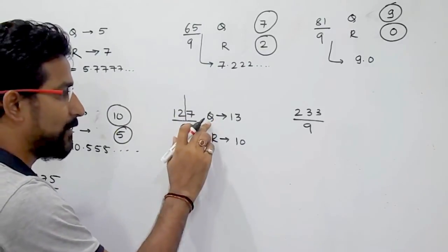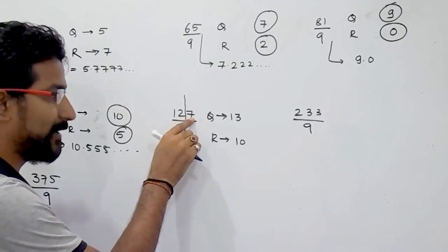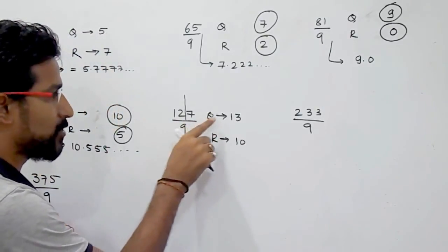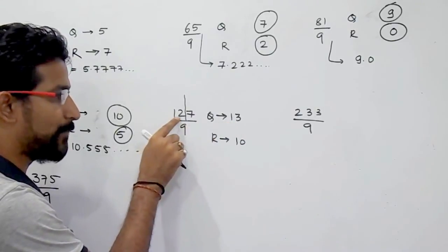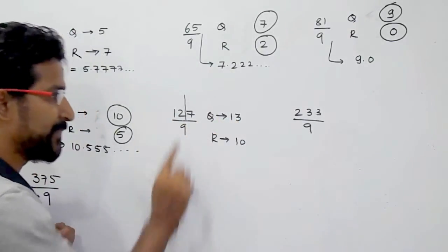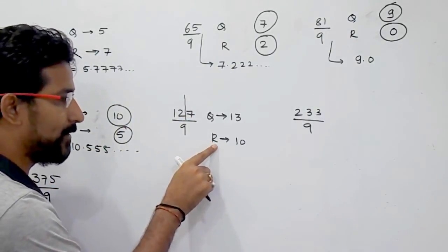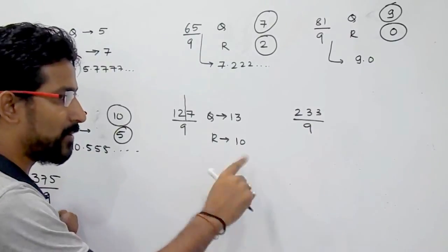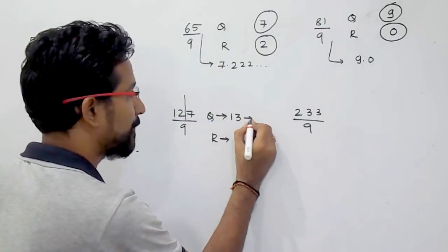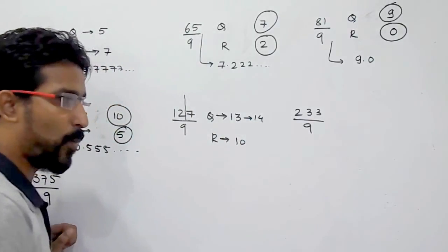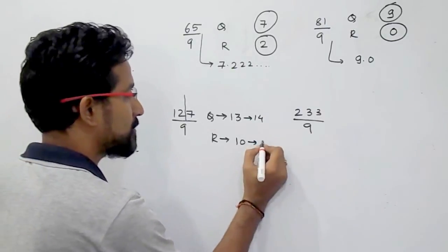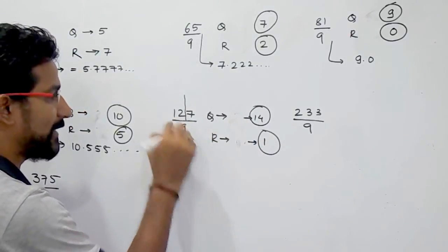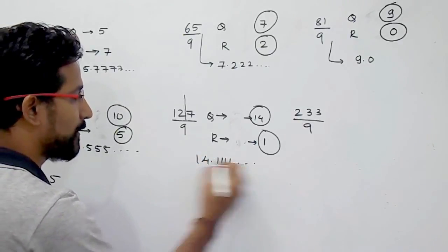So the remainder calculation gives 10. When that value is equal to or greater than 9, you increase the quotient by 1 — so 13 becomes 14 — and subtract 9 from the remainder: 10 minus 9 is 1. So the quotient is 14 and the remainder is 1. The answer is 127 divided by 9 equals 14.111 and so on.